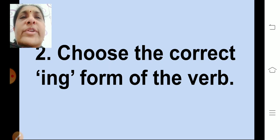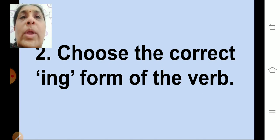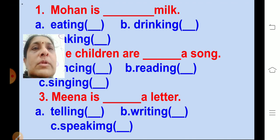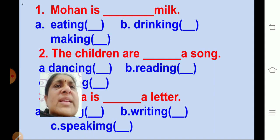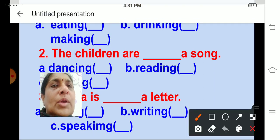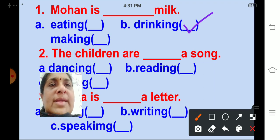The second activity: choose the correct -ing form of the word. When the action is going on, we add -ing to the word. Mohan is ___ milk. Options are eating, drinking, making. The correct answer is drinking. Mohan is drinking milk.